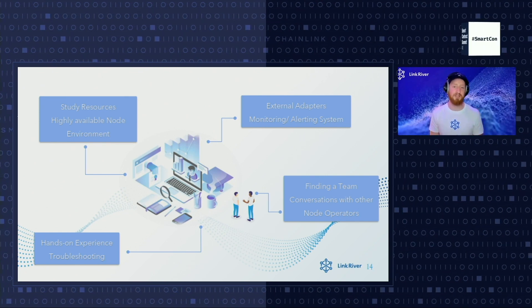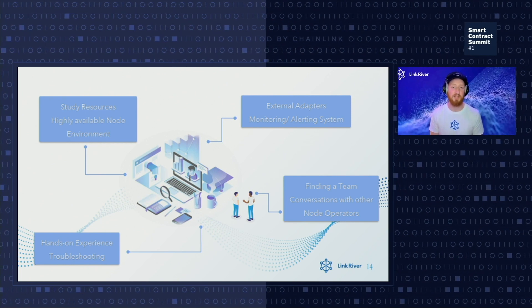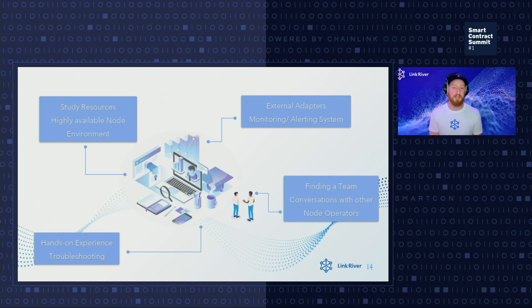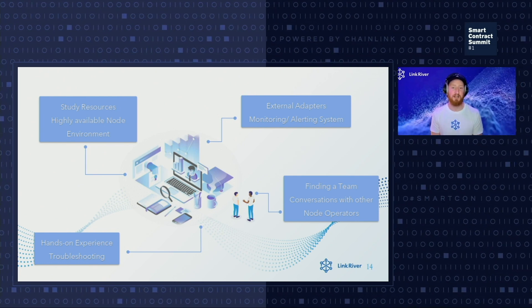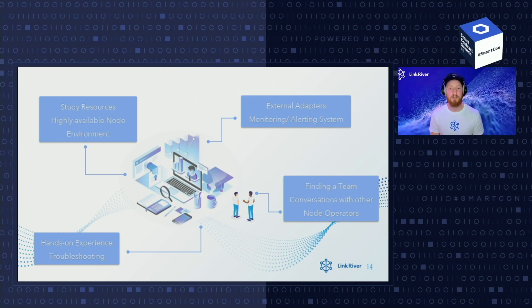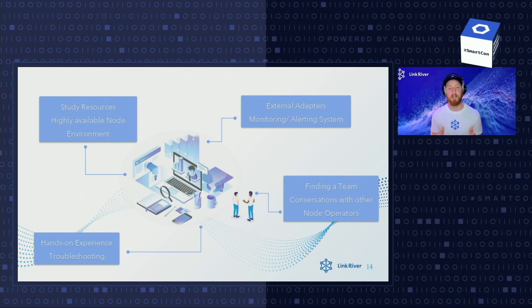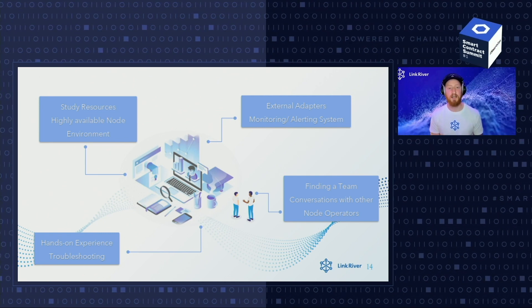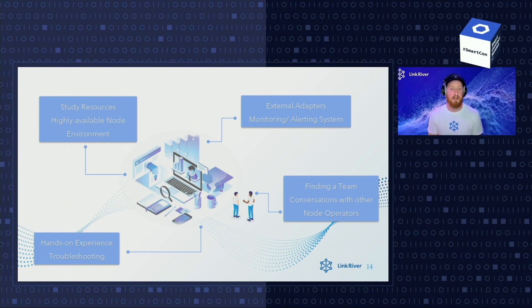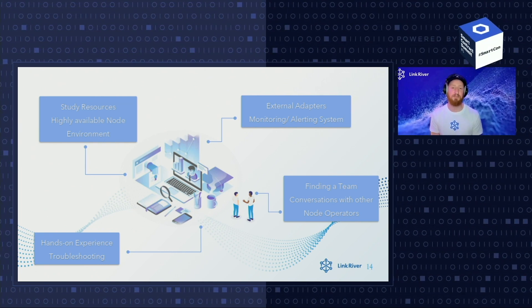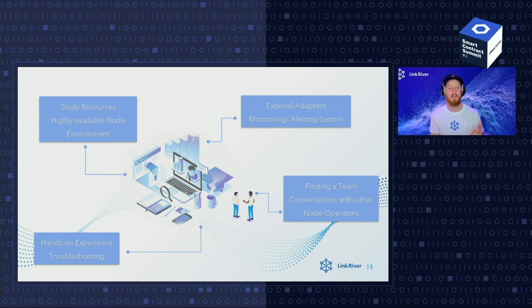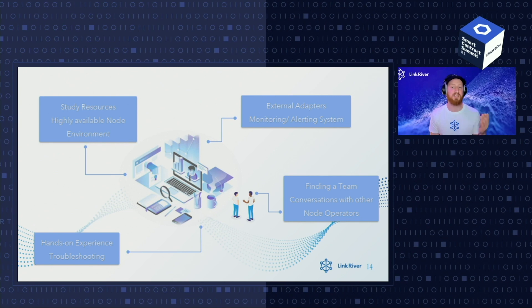In our opinion, the most important preparation is gaining hands-on experience by deploying testnet nodes, fulfilling basic job requests, and applying troubleshooting measures. Make sure to study existing documentation and establish a highly available node environment. Another very important aspect is the deployment of external adapters — custom connections between web APIs and the Chainlink node — and also to configure a monitoring and alerting system, including your own emergency strategy. It should be mentioned that running production nodes can be very demanding and time intensive, so it is really helpful to collaborate with like-minded people to find new team members and exchange with established node operators.